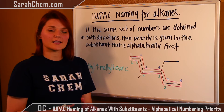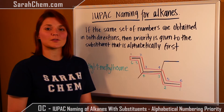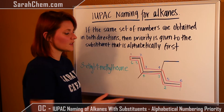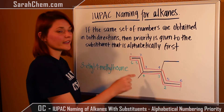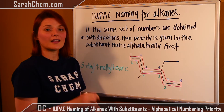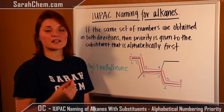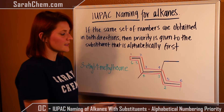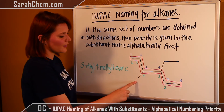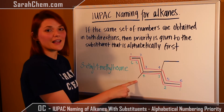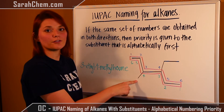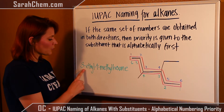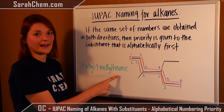Normally when you alphabetize, the alphabetically first substituent has absolutely no priority in numbers. But if you run into a case where it's equivalent in both directions of numbering, then you can default to giving the one that's alphabetically first the lower number. For example, this here would be ethyl and this here would be methyl. So because ethyl comes before methyl, I'm going to go with the green numbering — giving us 3-ethyl-4-methylhexane.